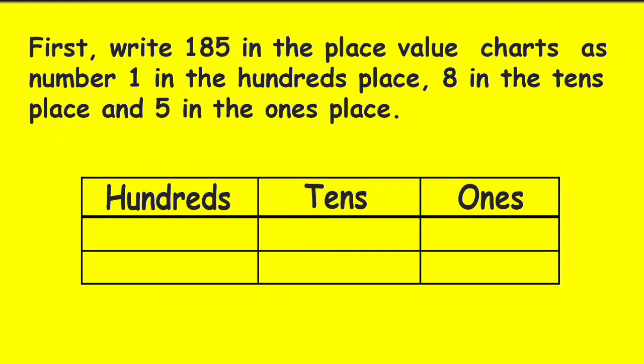First, write 185 in the place value chart as number 1 in the hundreds place, 8 in the tens place, and 5 in the ones place.